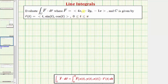Looking at our notes below, to evaluate the line integral, we'll first write F as a vector-valued function of T using the x, y, and z components of R of T. Then dR equals R prime of T dt. Once we have it in this form, we'll find the dot product and then evaluate.